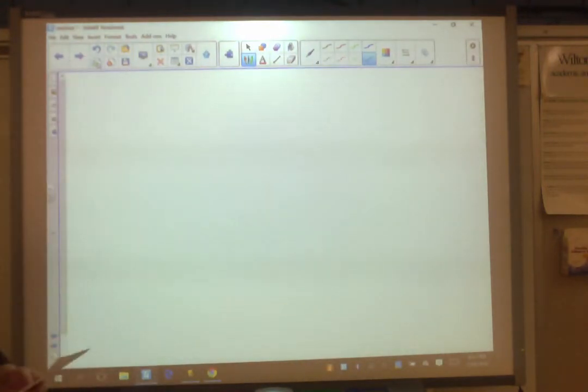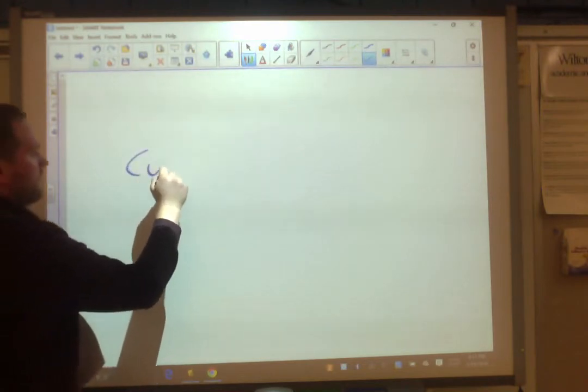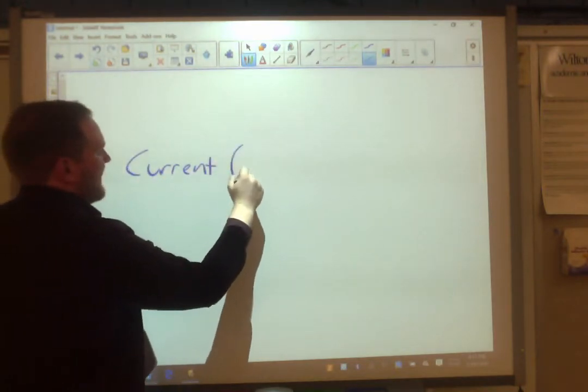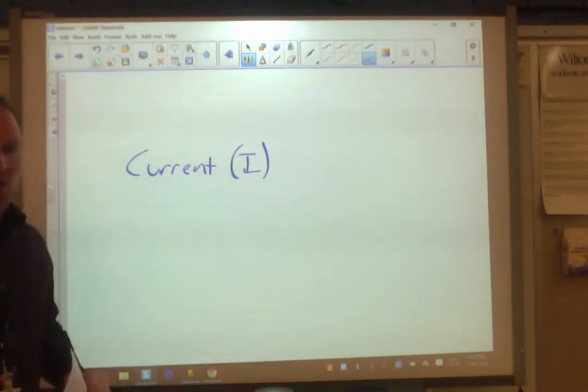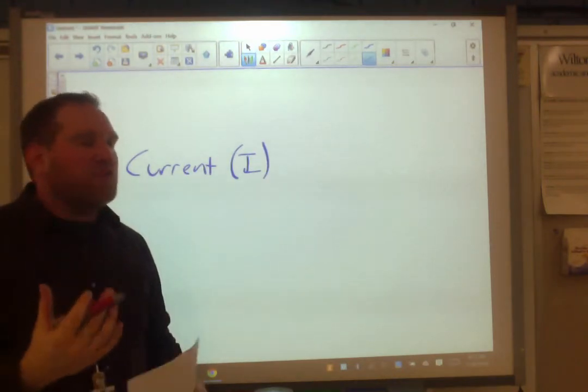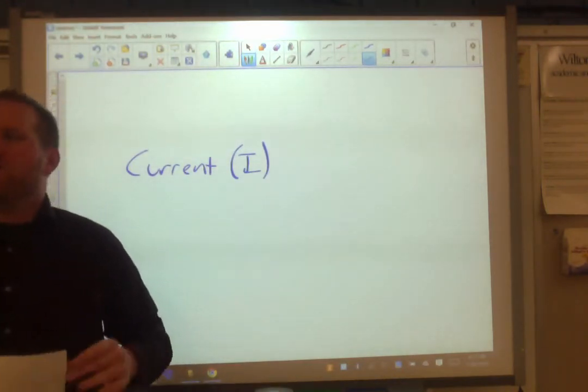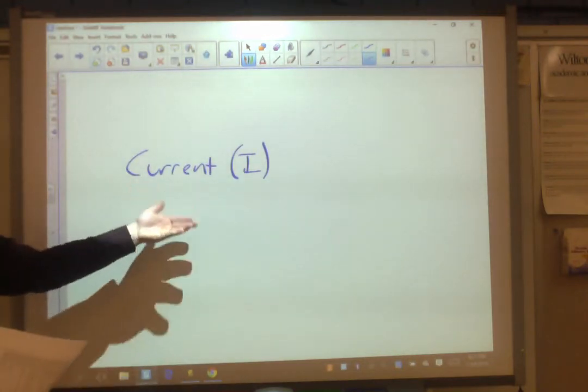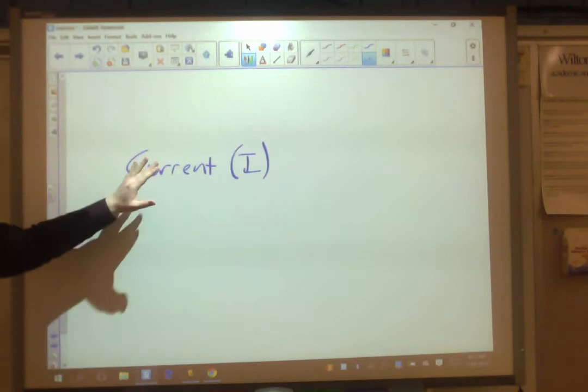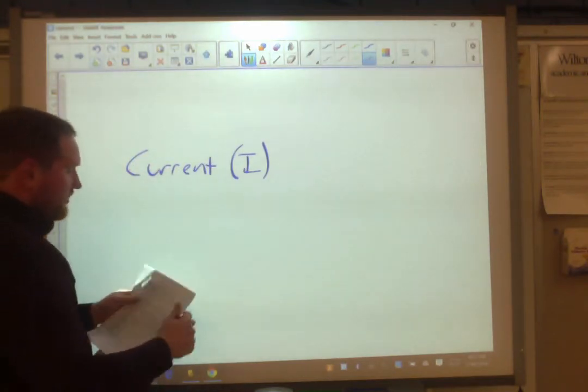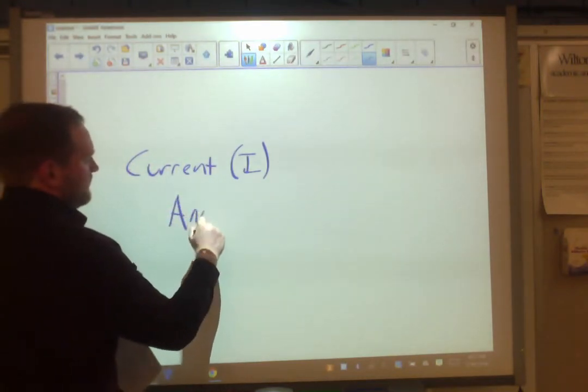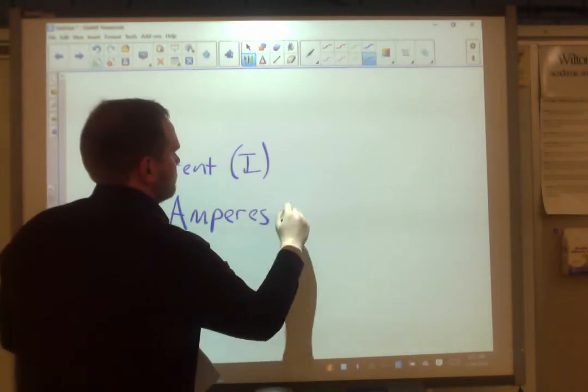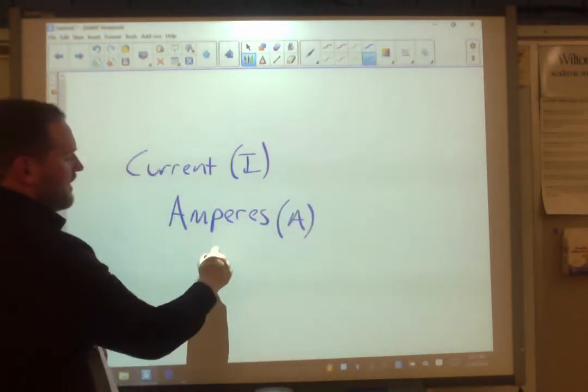What is current? Current, which is I, is a measure of how much electricity is actually flowing. What's the actual flow rate of electrons through the circuit? How much electricity is actually being generated is your current. What is the unit for that? That would be amperes, commonly known as amps.